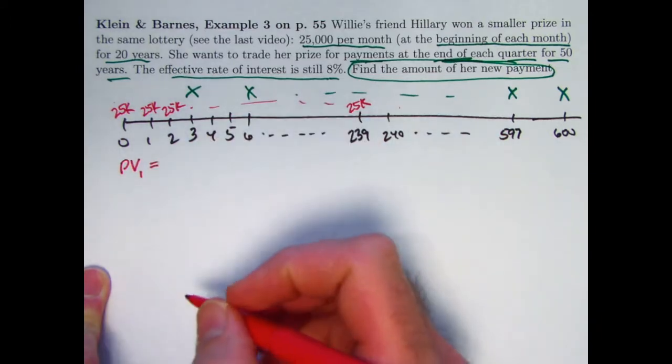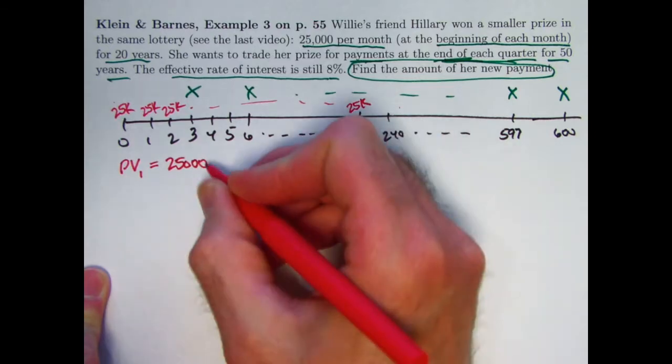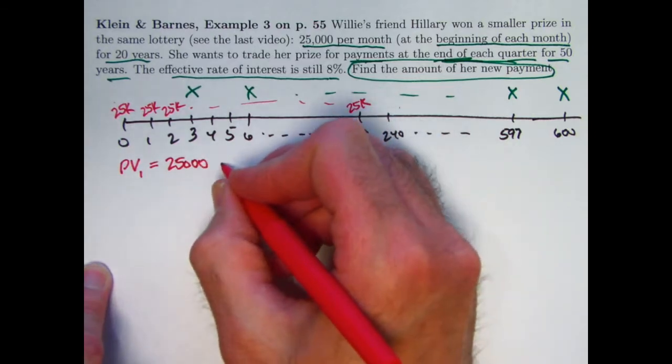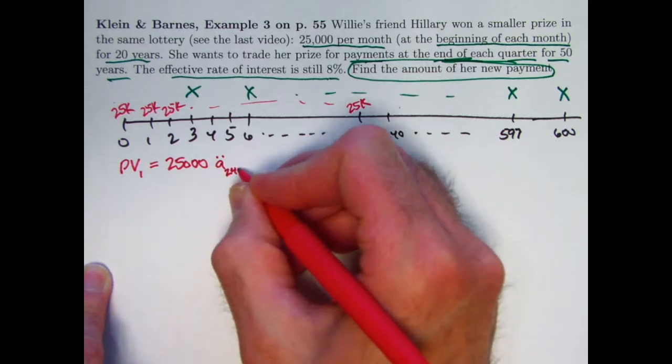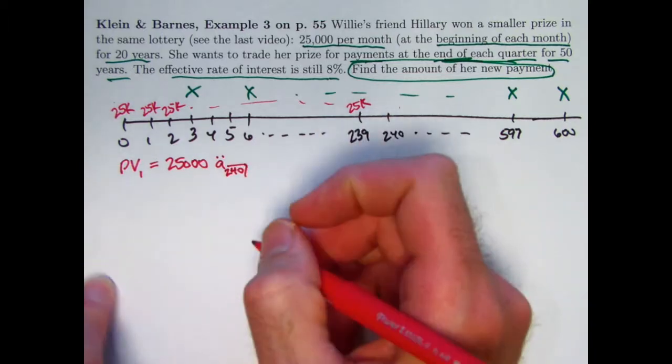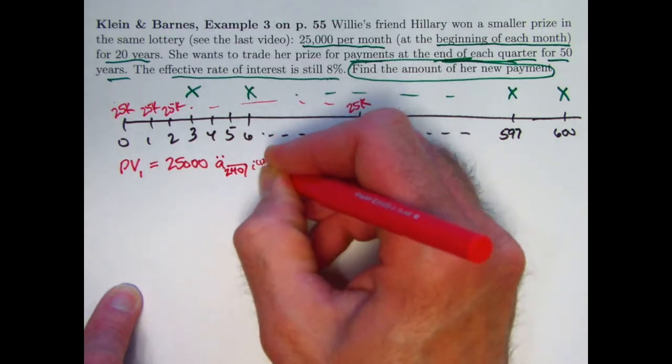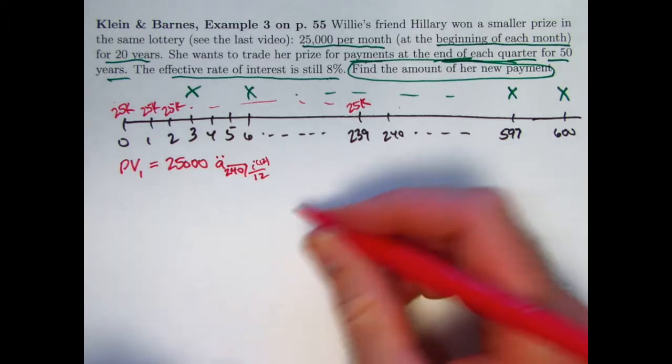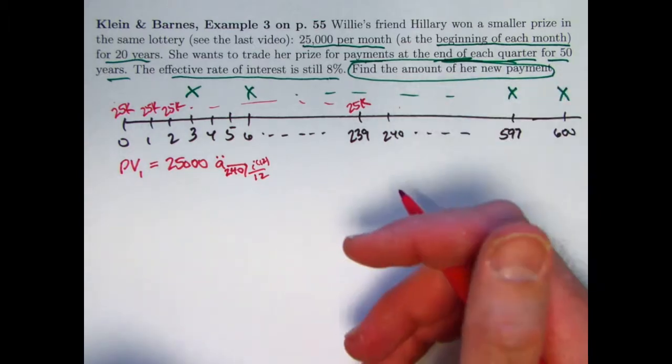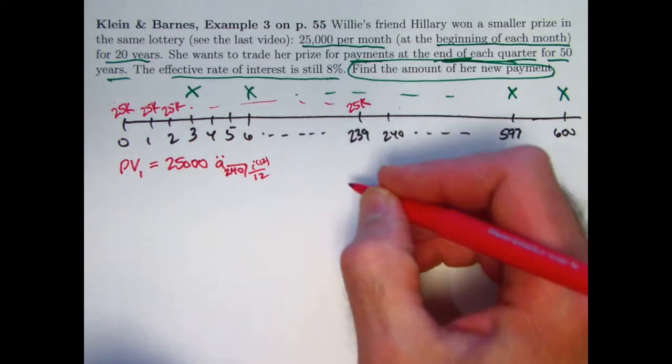What's the present value of the first annuity? It is an annuity due. So symbolically, it would be 25,000 times a double dot for an annuity due. There's 240 payments, and it would be the equivalent monthly interest rate here, which we could write as I-12 over 12 if we like. We wouldn't have to write it like that, but we could, I-12 being the nominal interest rate, annual interest rate, compounded monthly. We can write it that way.